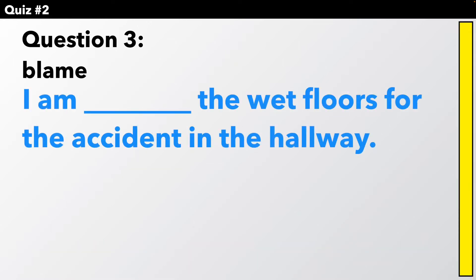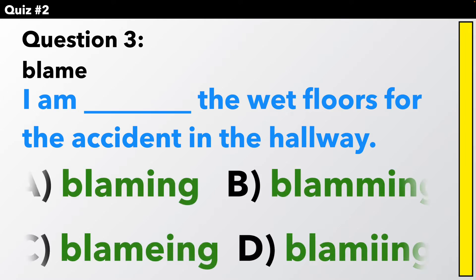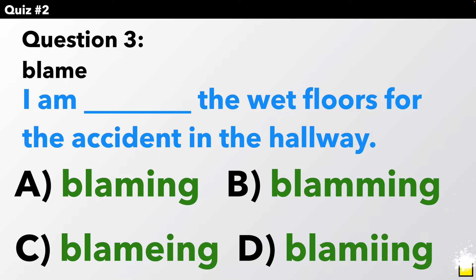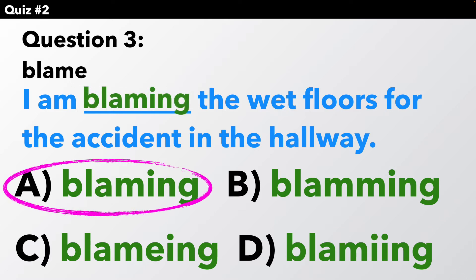Question three. Blame. I am blaming the wet floors for the accident in the hallway. How should we spell blaming? This time the answer is A. When we have one E at the end, we drop it before adding I-N-G.